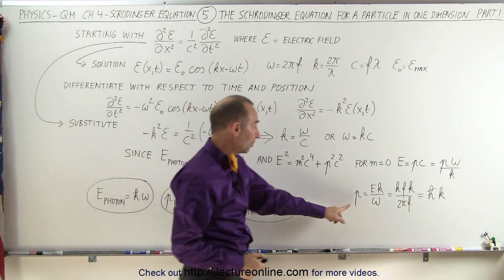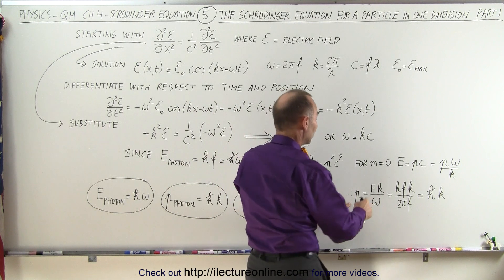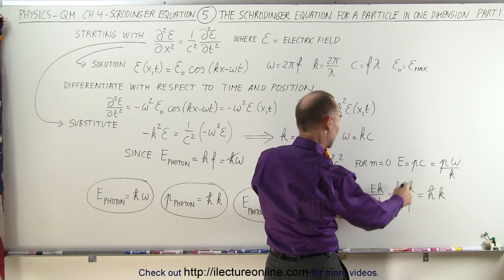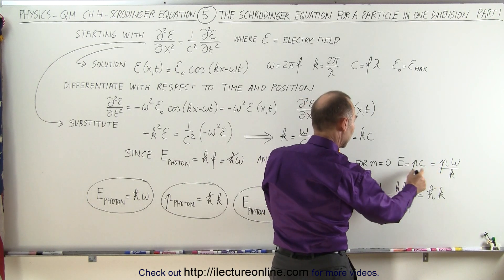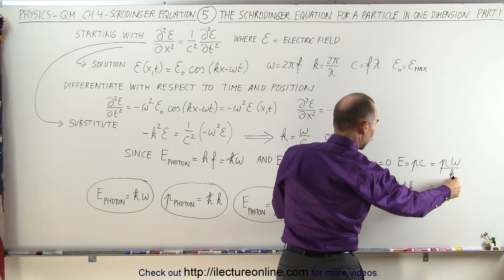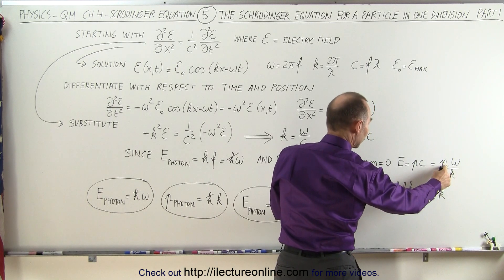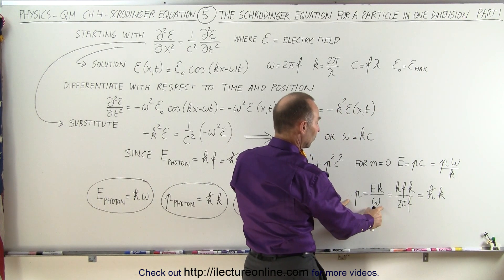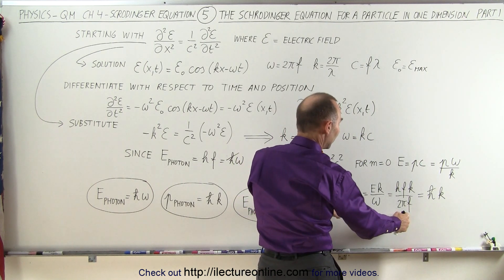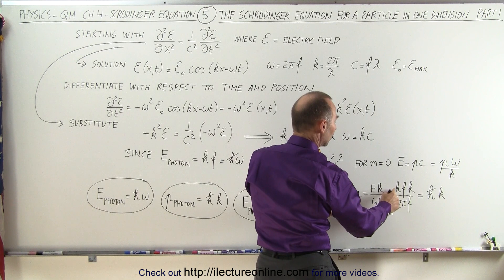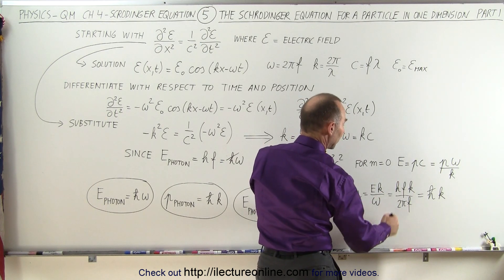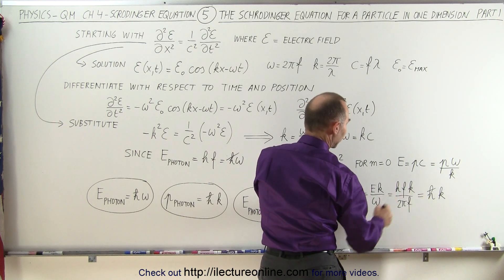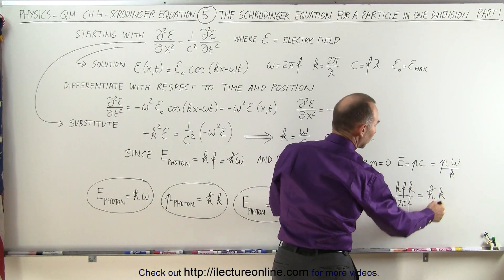We can then solve for momentum from this equation, writing it as E times k divided by ω. Since ω equals 2πf and the energy of a photon is h times f, the frequencies cancel out, and h divided by 2π is simply ℏ times k. So the momentum can also be written as ℏk.